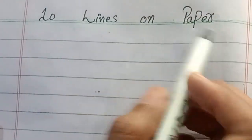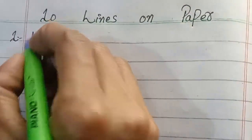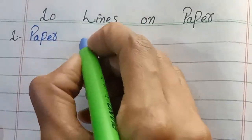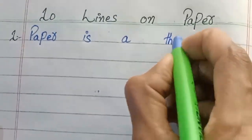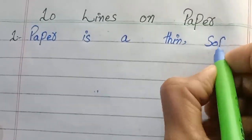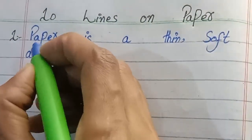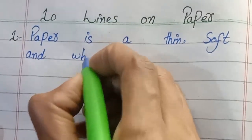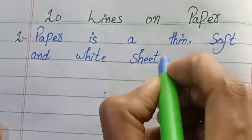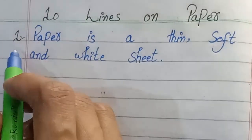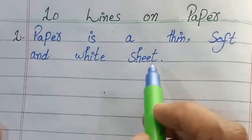Tan Lines on Paper. 1. Paper is a thin, soft and white sheet.